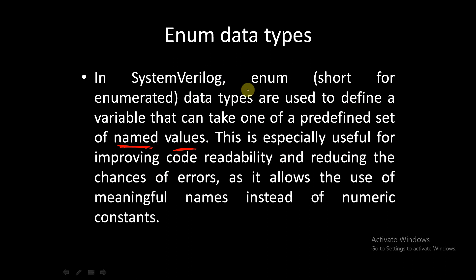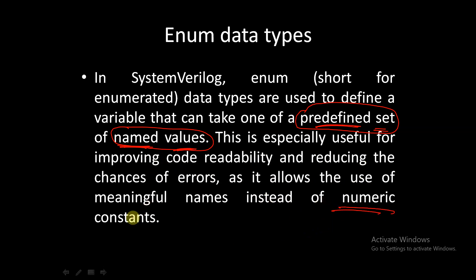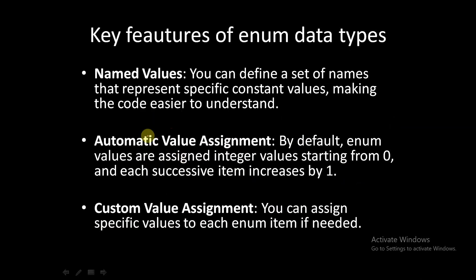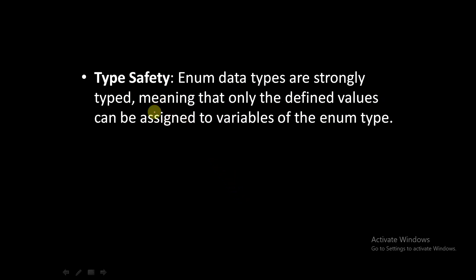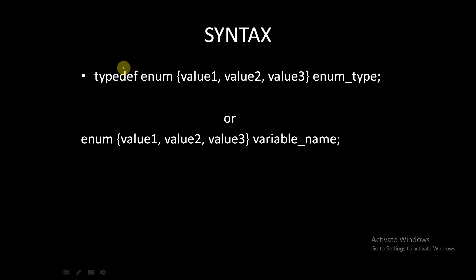Enum is used to define a variable that can take one of a predefined set of named values. This is especially useful for improving code reliability and reducing chances of error, as it allows use of meaningful names instead of numerical constants. The key features are: named values, automatic value assignment, custom value assignment, and type safety.